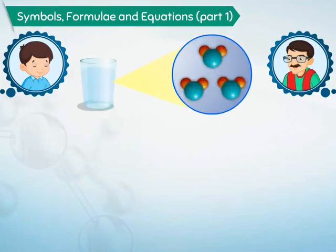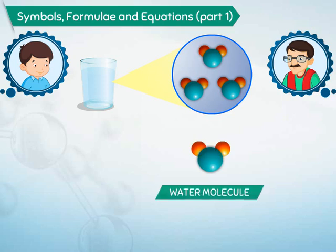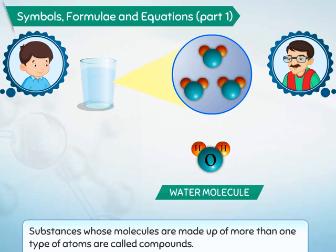That's because each molecule of water is made up of two hydrogen atoms and one oxygen atom. Molecules like water which are made up of more than one type of atoms are called compounds.